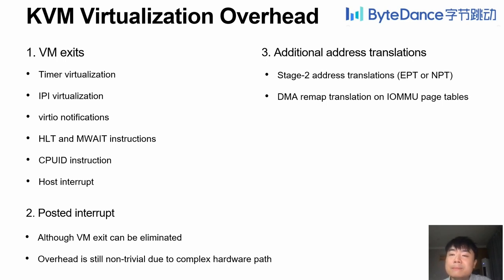We also observe that posted interrupts, which were introduced by VMS to eliminate VM exits for guest interrupts, still incurred some overheads due to complex hardware paths designed for security. Moreover, additional address translations, such as stage 2 address translations like EPT on Intel or NPT on AMD, and DMA remap translations, also contribute to the overheads.